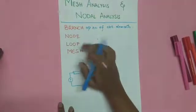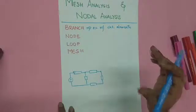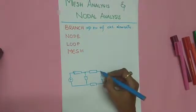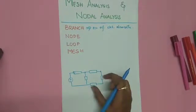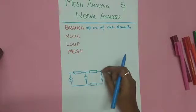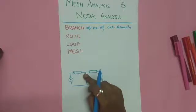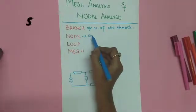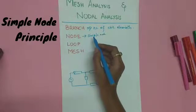What is a node? A node is a junction where two or more circuit elements are connected — that is, where two or more branches are connected. For example, at this point these two branches are connected, so this is a node. Here three branches are connected, so this is also a node. There are further classifications: simple node and principal node.